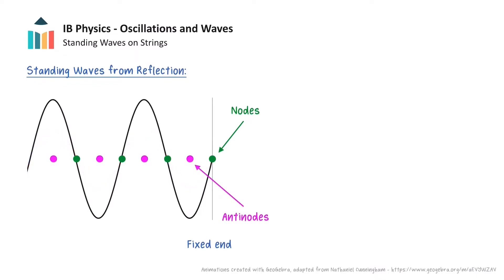Similarly, there are points called antinodes that oscillate with maximum amplitude due to constructive interference. We can see that the distance between two consecutive nodes, or two consecutive antinodes, is half the wavelength of the standing wave. Moreover, the distance between a node and an adjacent antinode is equal to a quarter of the wavelength.